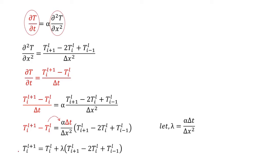This equation states that the temperature of any node i at the next time step l plus 1 will be dependent on the temperature of that node at the current time step, plus lambda — where lambda is the material property times time step divided by grid size squared — times the temperature of the right neighboring node i plus 1 at the current time step, minus 2 times the temperature of node i at the current time step, plus the temperature of the left neighboring node i minus 1 at the current time step. This formulation is called the explicit method.